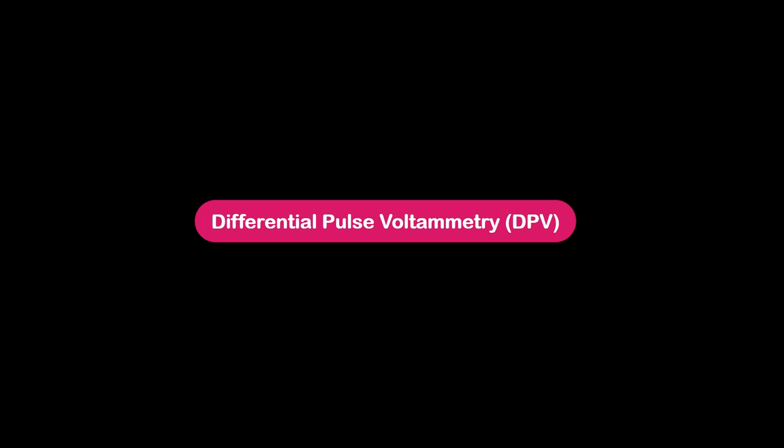DPV is an important characterization tool in electrochemistry and it is used by different sections of researchers. In this video we are going to learn about the fundamentals of DPV and what specific information can be obtained by doing DPV. Before we start the actual discussion, we should have some background information.